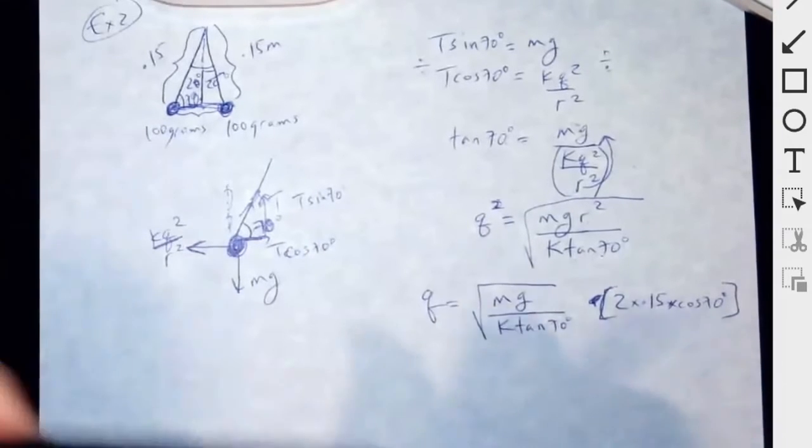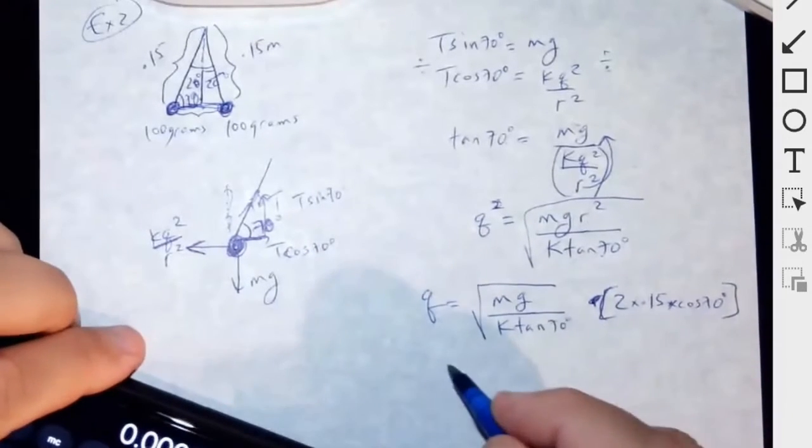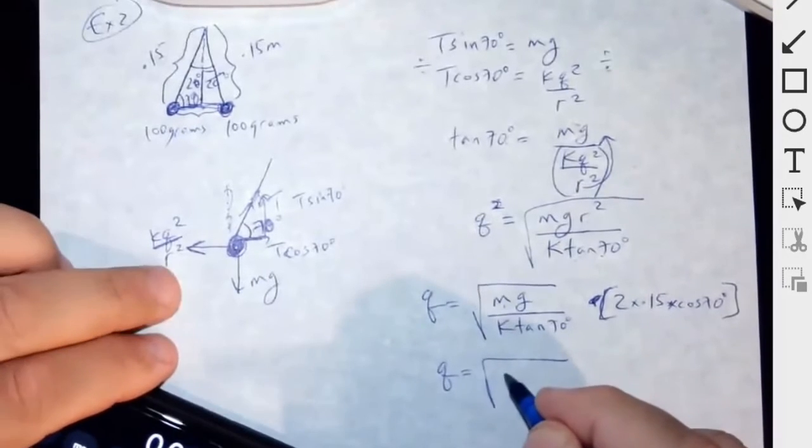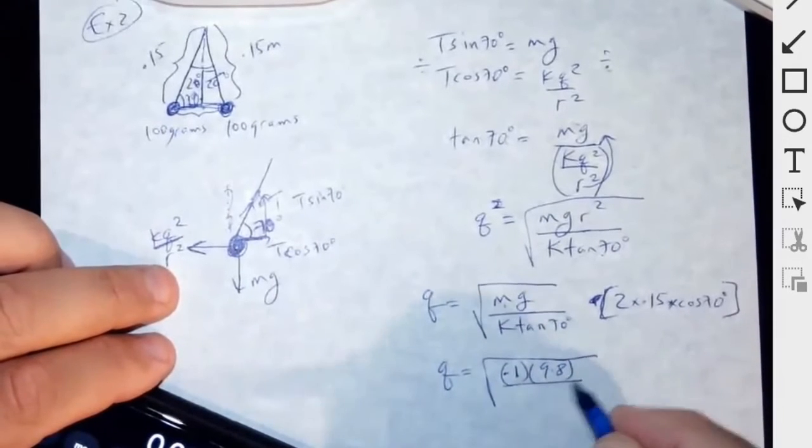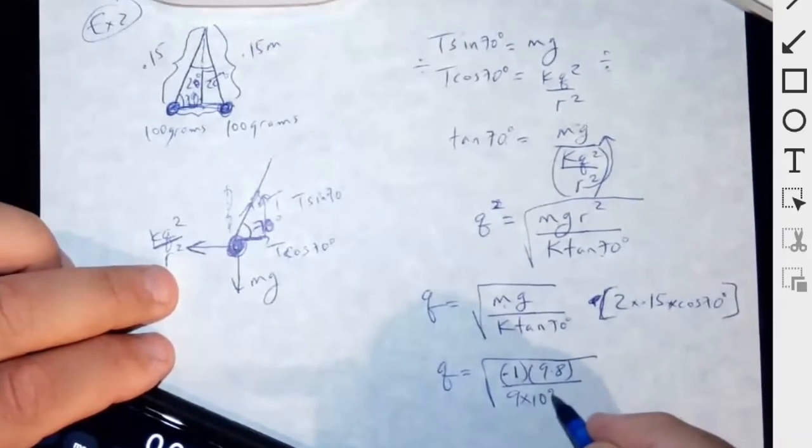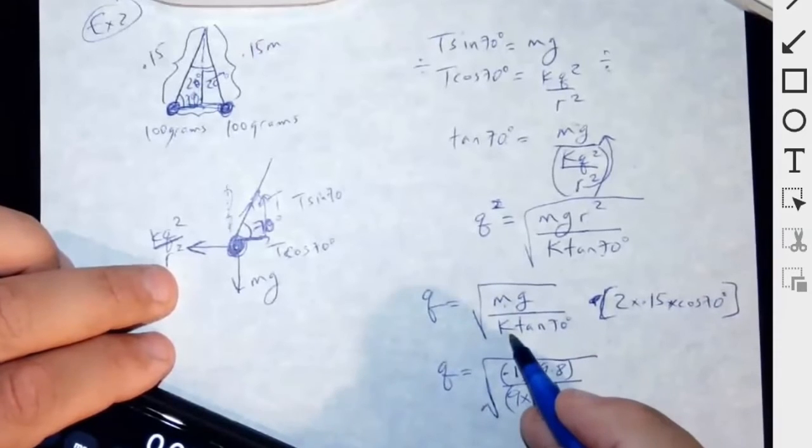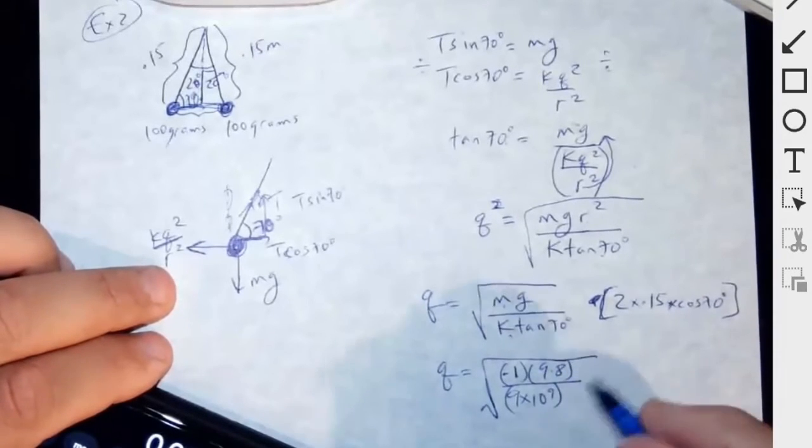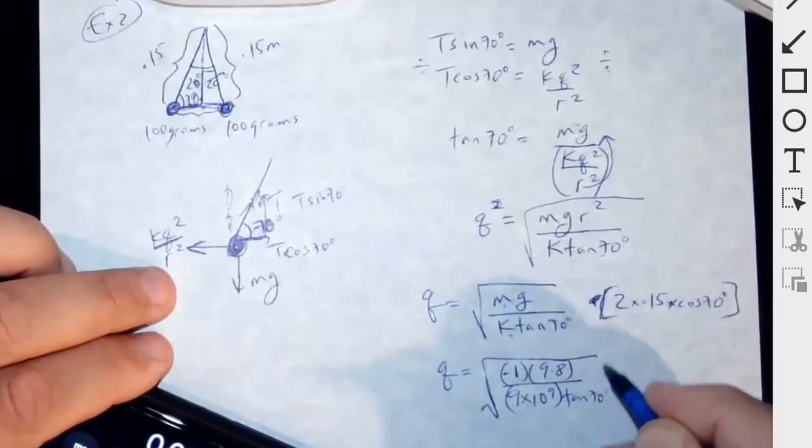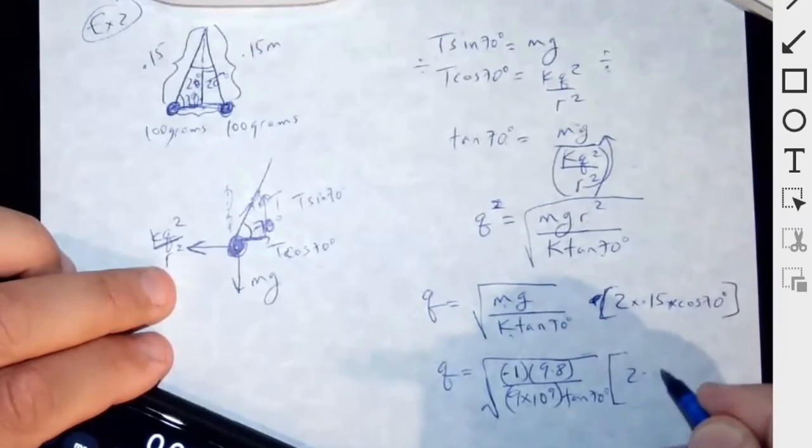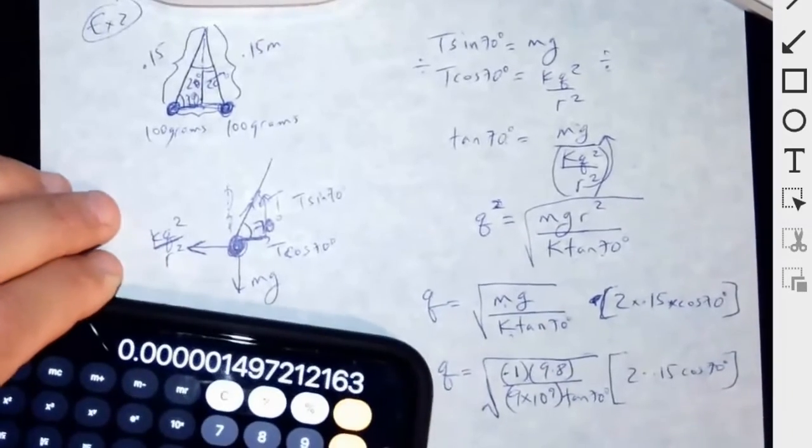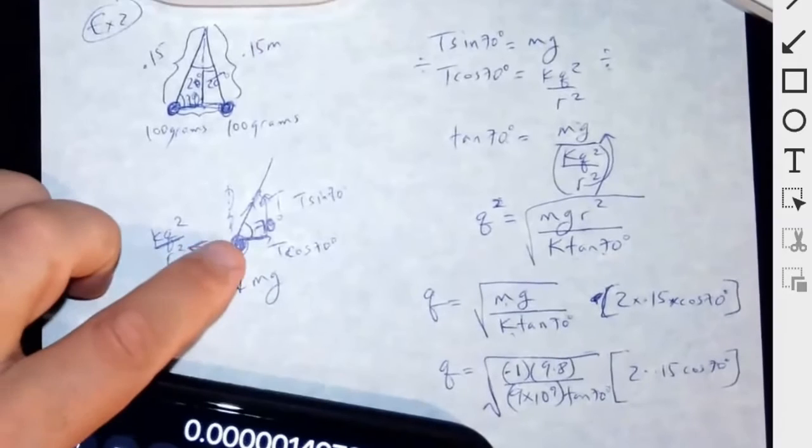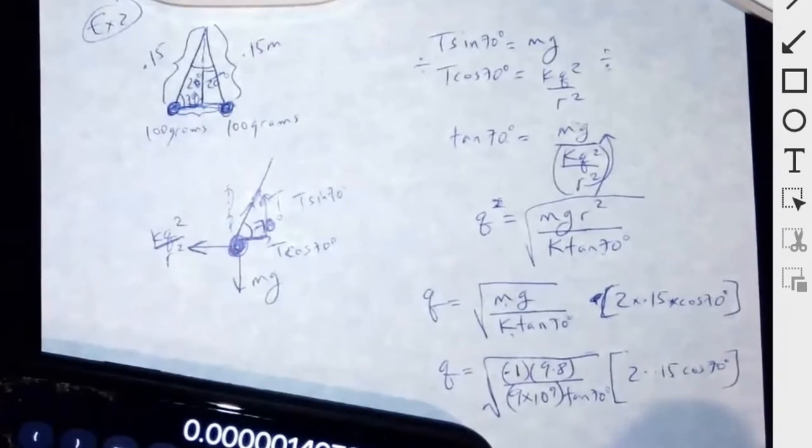Let's see what that gives us. And then the mass, we would have to put 0.1 again, times 9.8 over 9 times 10 to the ninth is the Coulomb constant times tangent 70 times 2 times 0.15 cosine 70. Then I'm expecting when I do this that I'm going to get an answer in that same ballpark. Something like a microCoulomb probably in that ballpark.